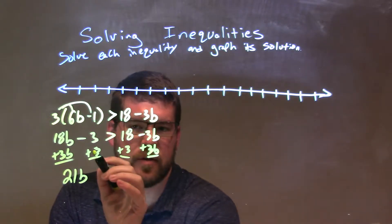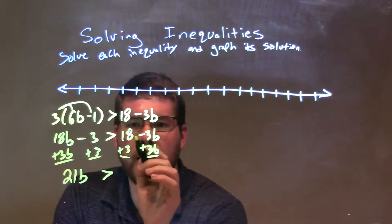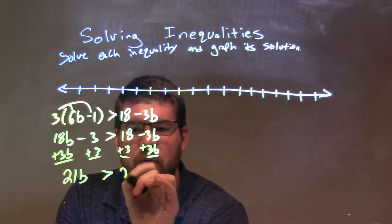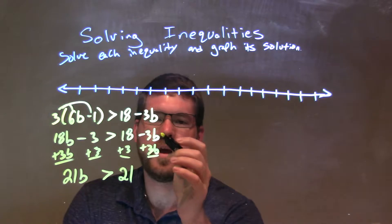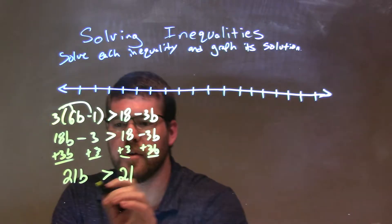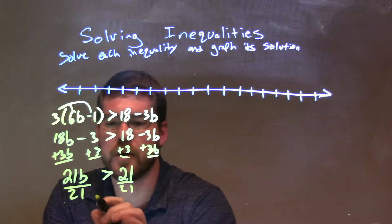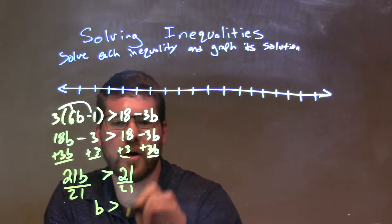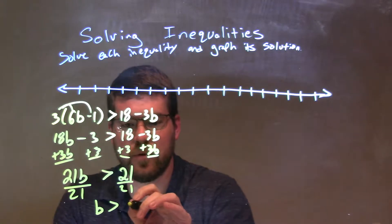So 18b plus 3b comes out to be a 21b. And then, while the 3's cancel here, we'll add to the greater than side, and 18 plus 3 is also just 21. And then negative 3b and 3b cancel. If we divide both sides by 21, we're straight forward here.